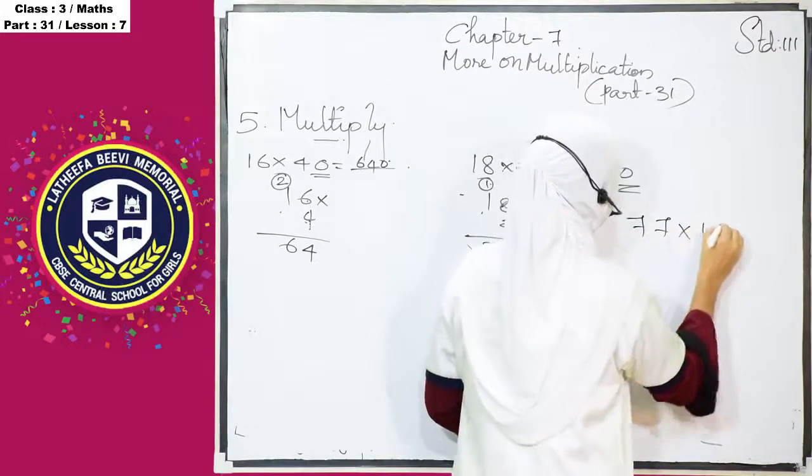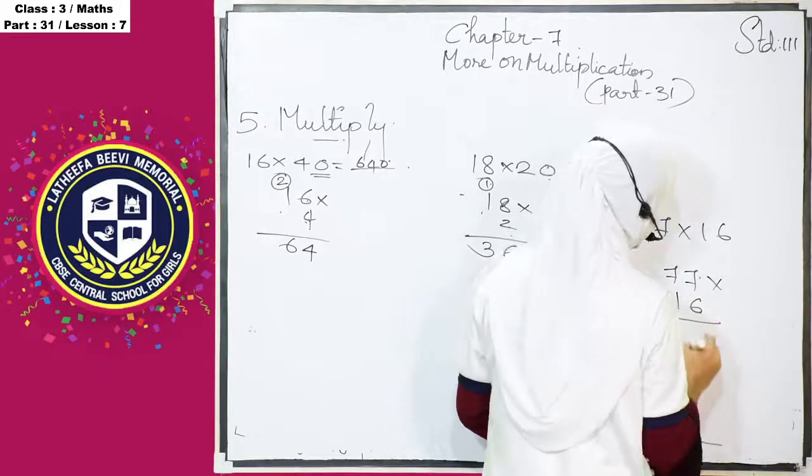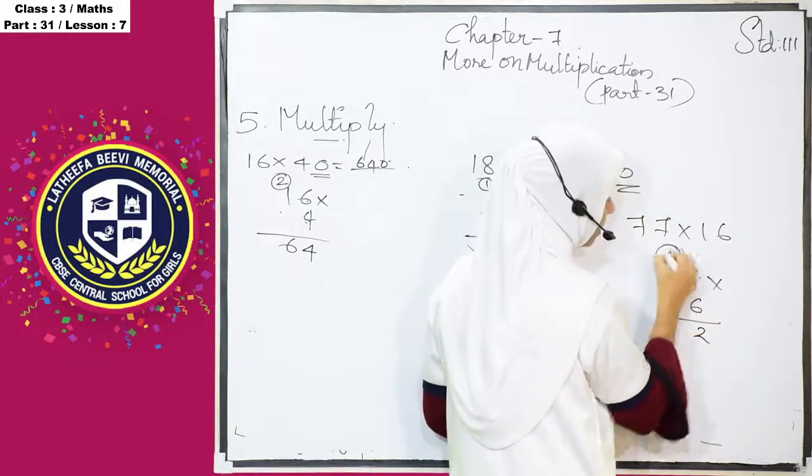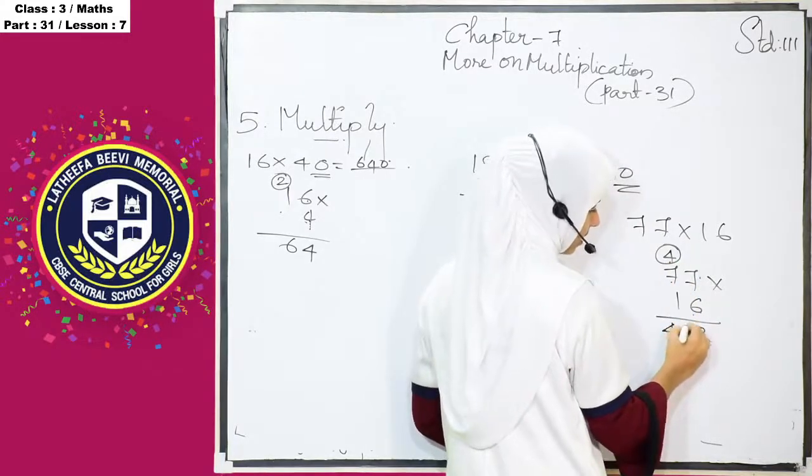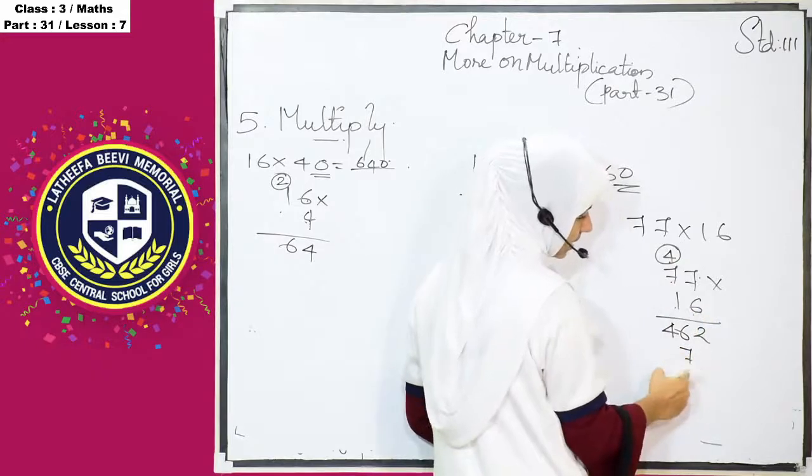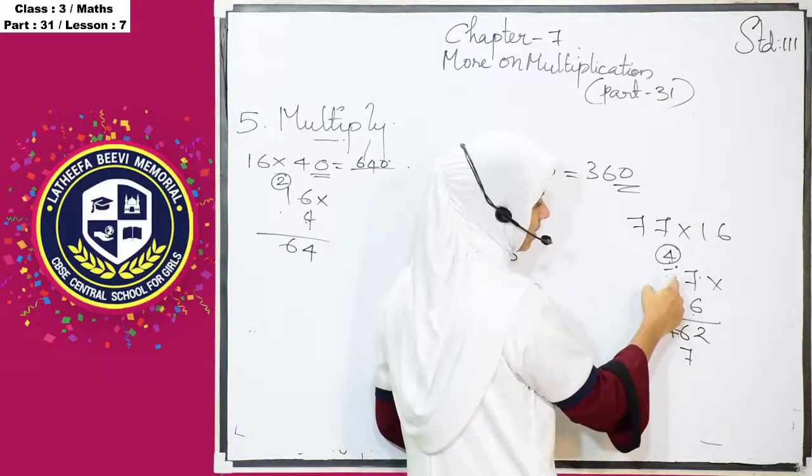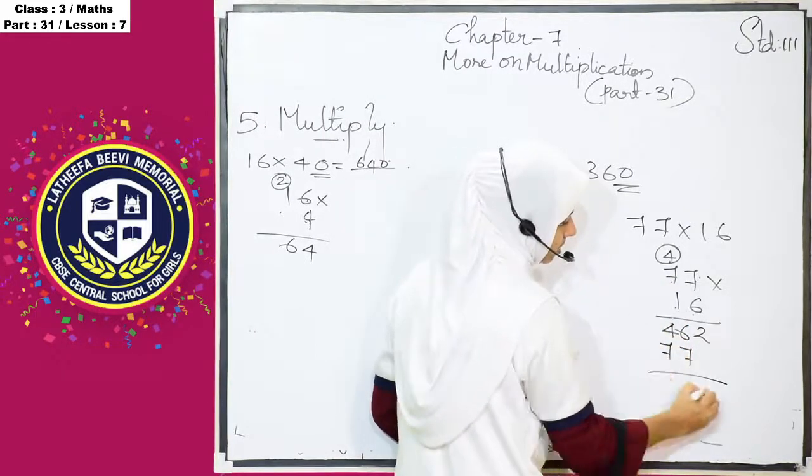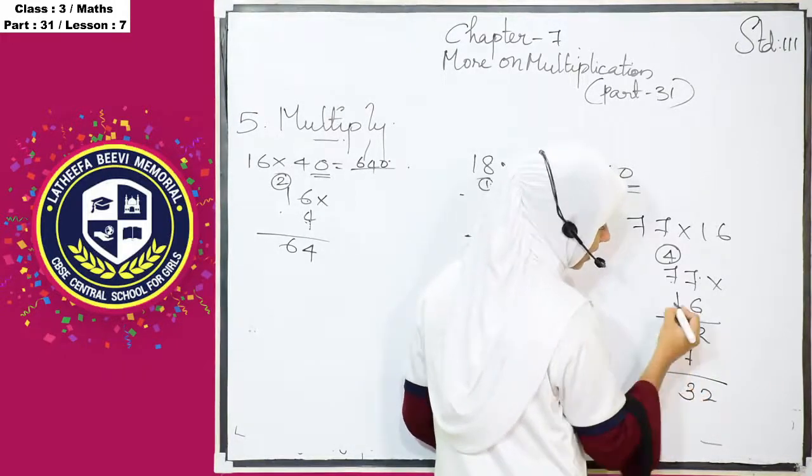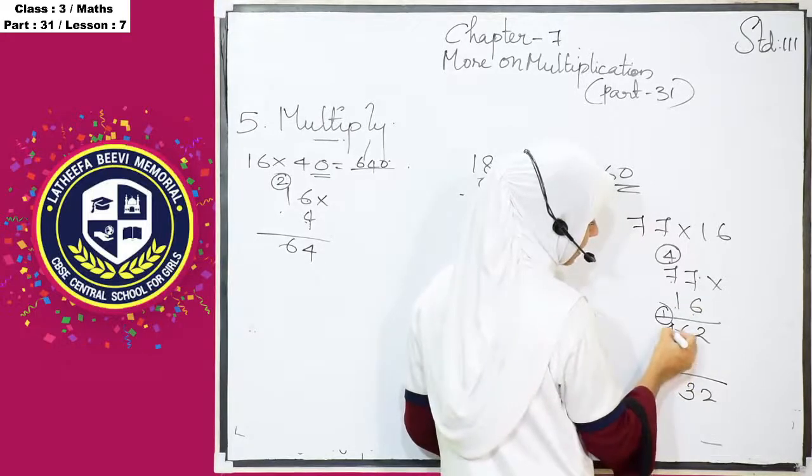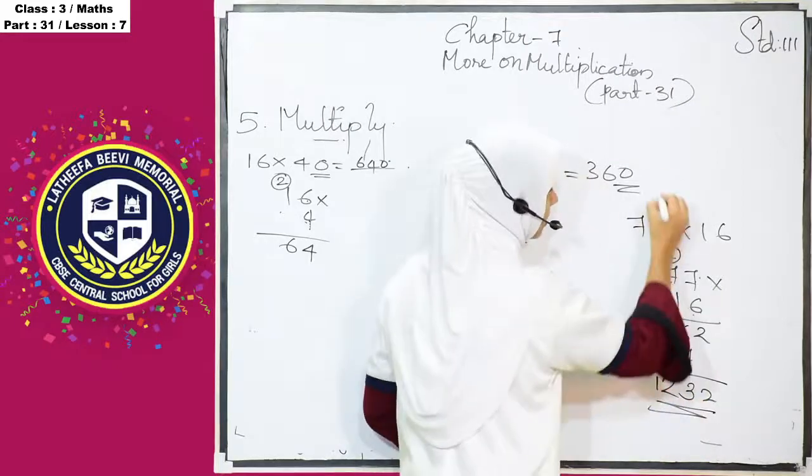77 into 16. We know that 6, 7's are 42, 2 is here. 4 is carry over. And 6, 7's are again 42 plus 4, 46. Then, 1, 7's are 7. That 7, we have to write in the place of 10's place of this number. Then, 1, 7's are again 7, 2. And 7 plus 6. 7 plus 6 is 13. 3 is here. 1 is again carry over. 7 plus 4 is what? 11 plus 1, 12. 1,232 is the answer.